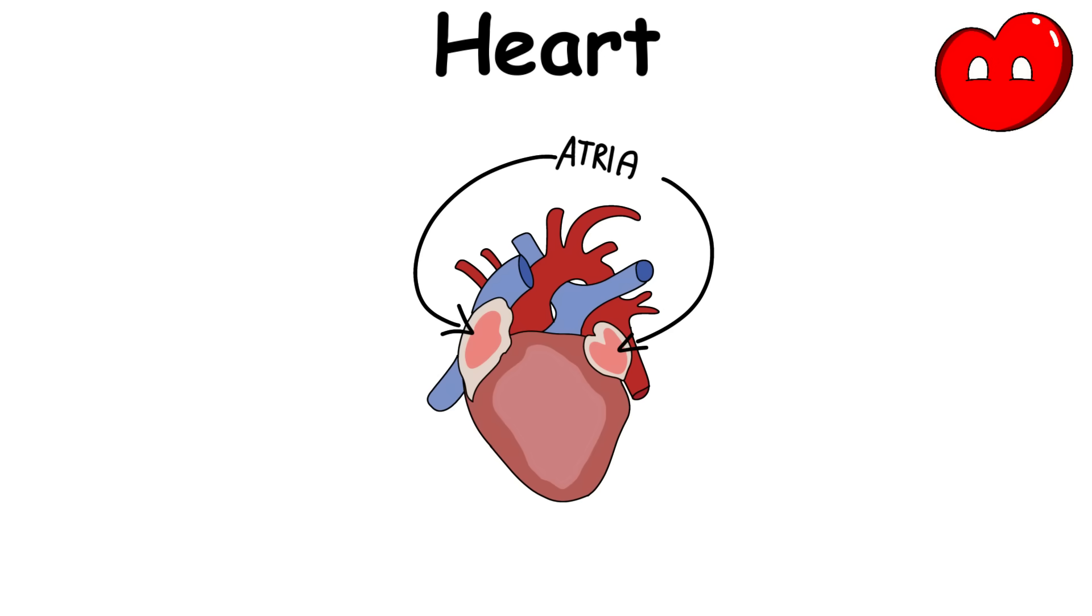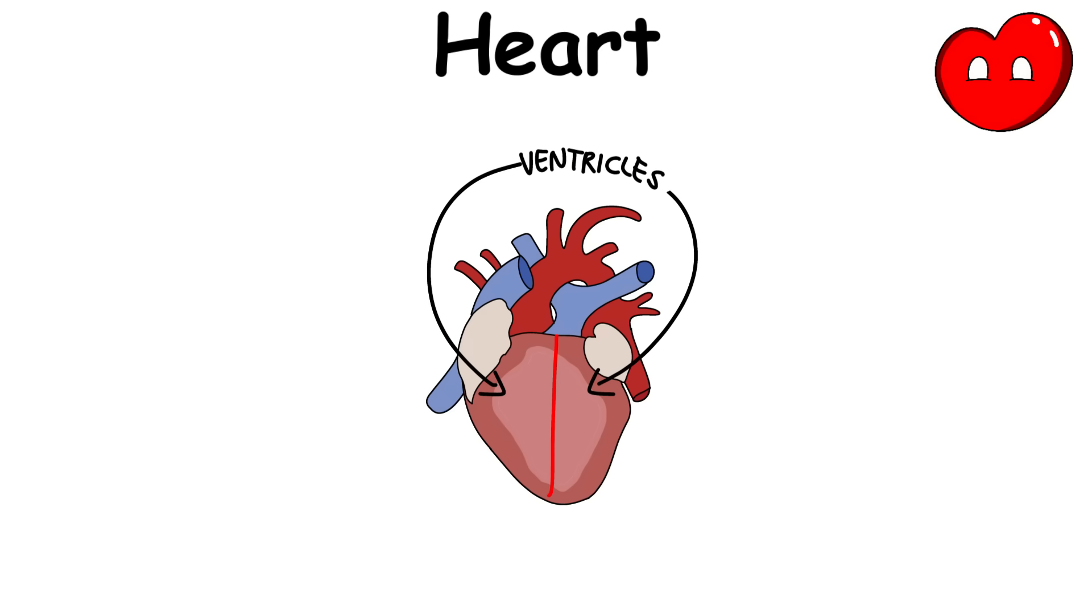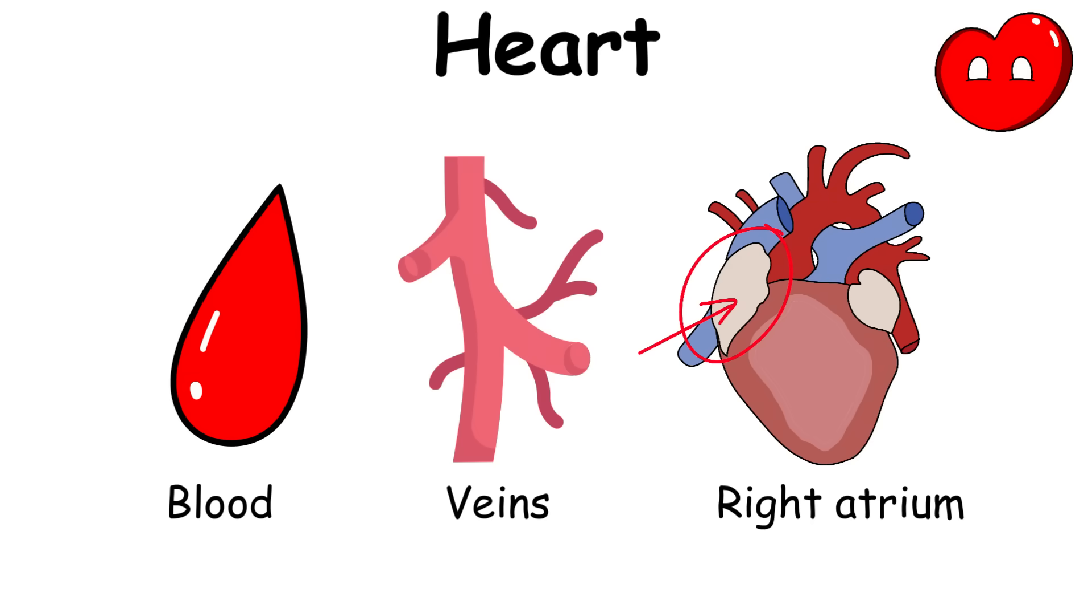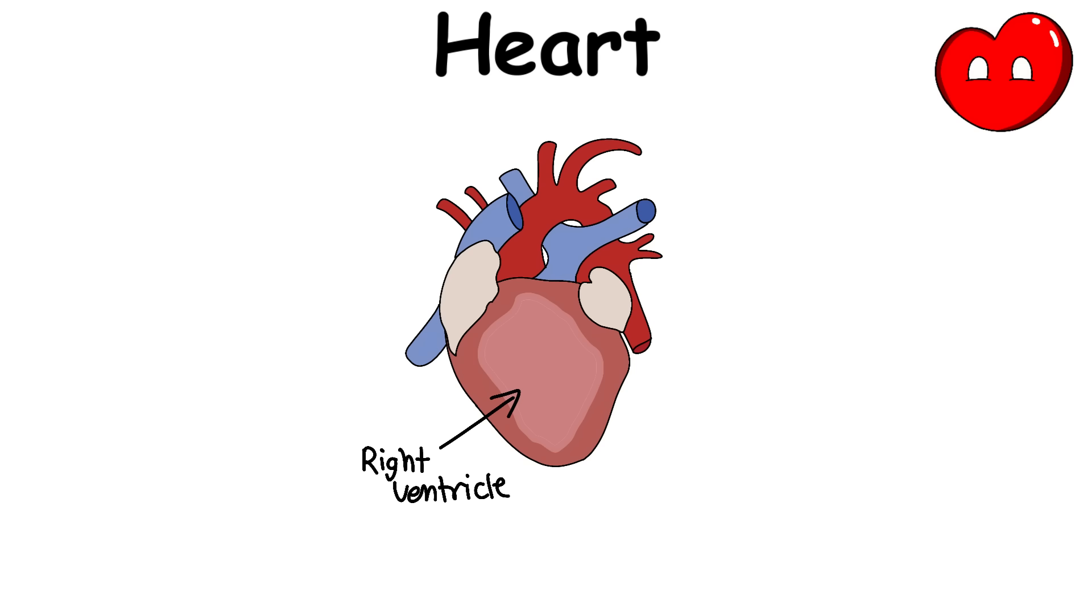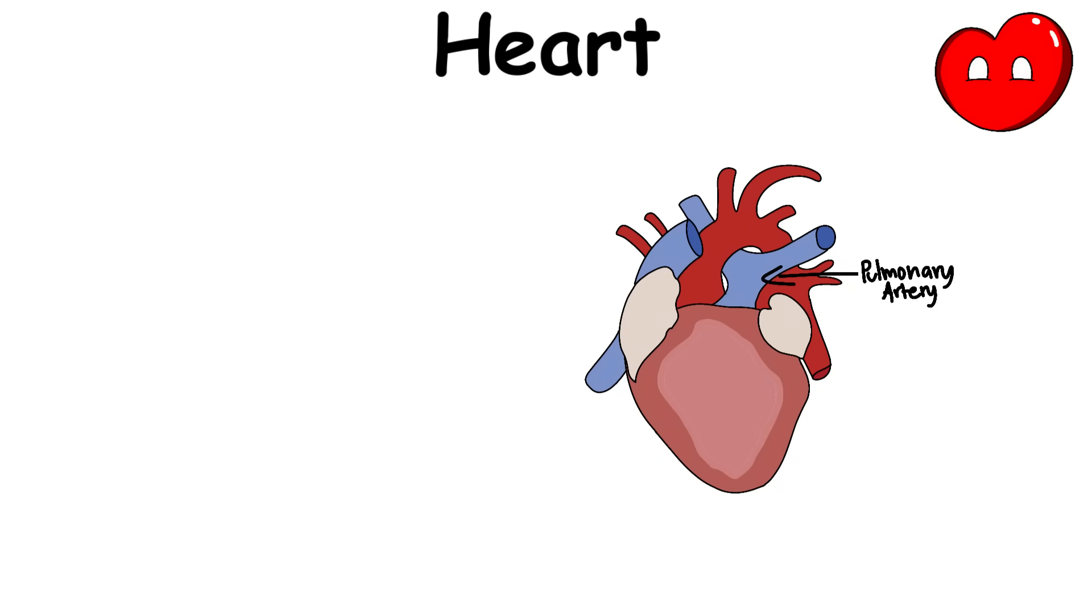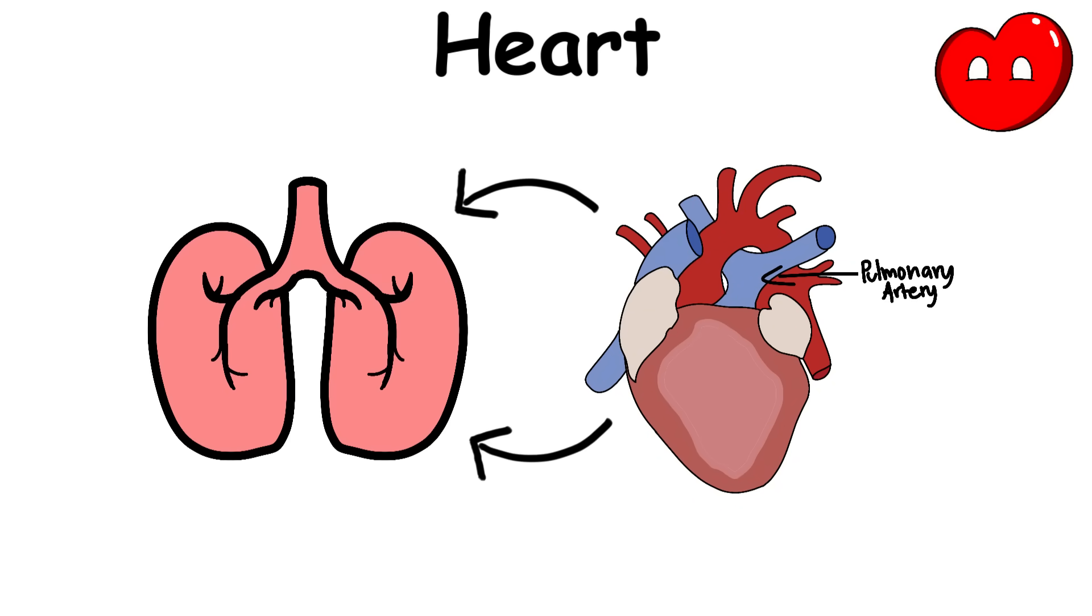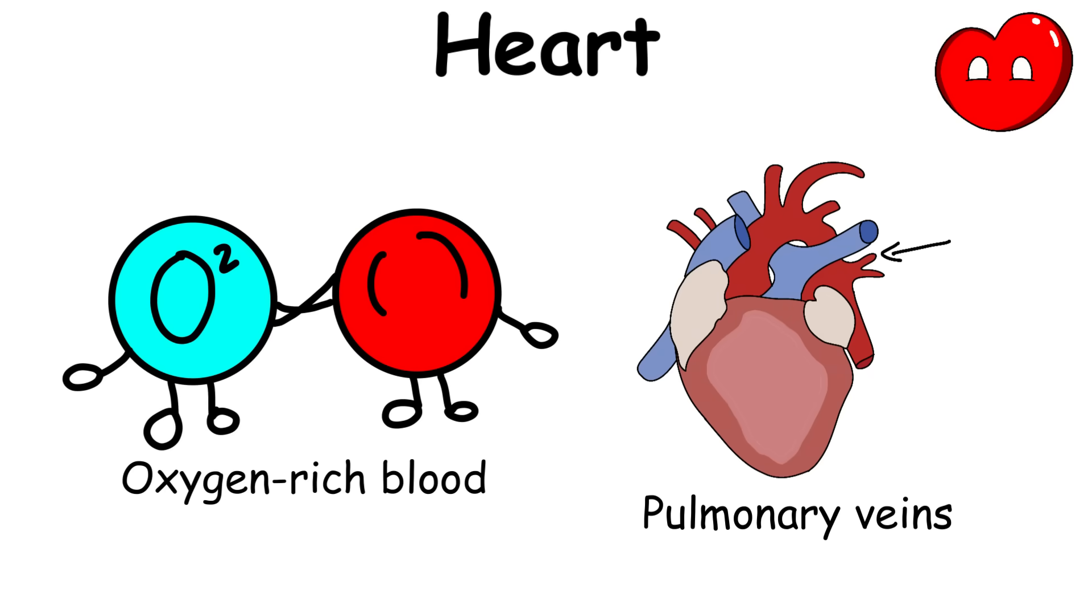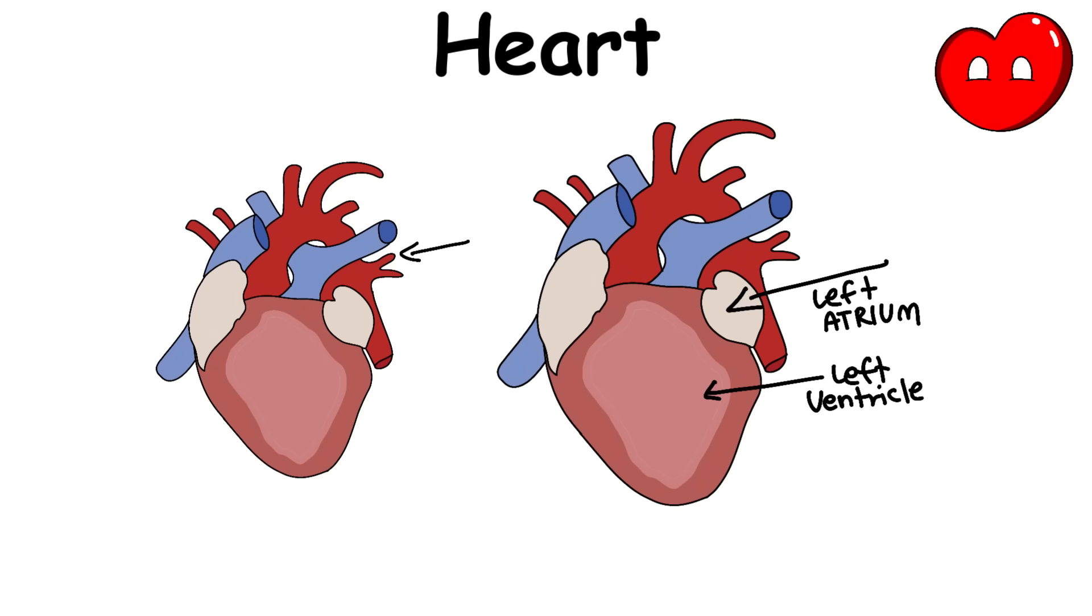Blood flows into the right atrium from the veins and flows into the right ventricle. Blood flows into the pulmonary artery to reach the lungs, putting oxygen into the blood. The oxygen-rich blood will travel through the pulmonary veins to reach the left atrium and the left ventricle.